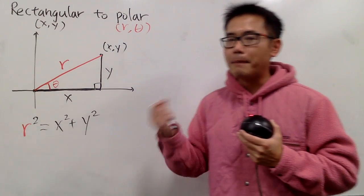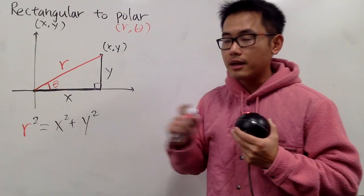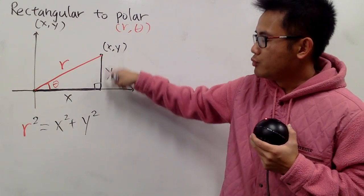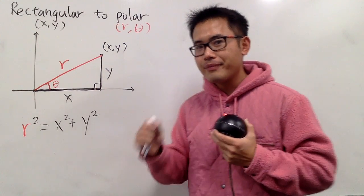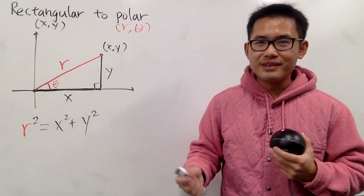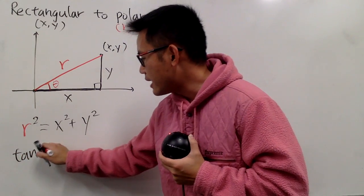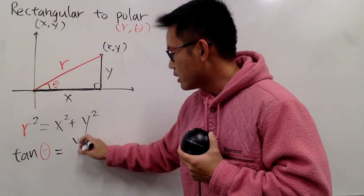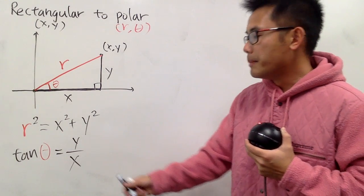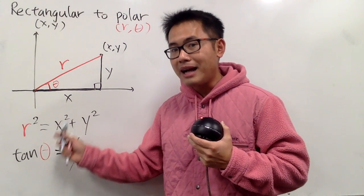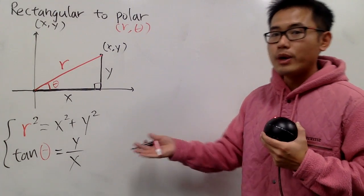R can actually be positive or negative — I will show you the interpretation for that. Now let's talk about how we can get theta. We have x and y. By looking at the right triangle, y is the opposite side and x is the adjacent side. Opposite over adjacent — that's tangent. So we know that tangent of theta equals y over x. I'm not going to take the inverse tangent on both sides, because there are in fact infinitely many angles that will satisfy this. This is what we are going to use.